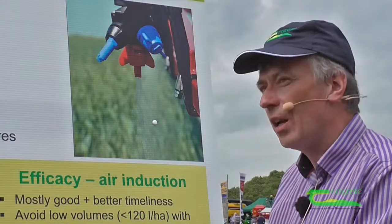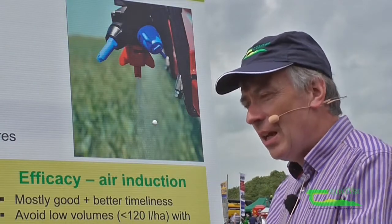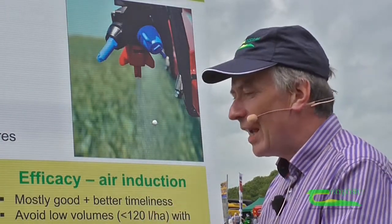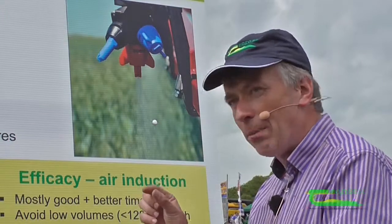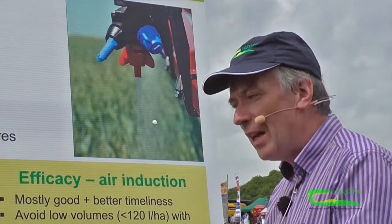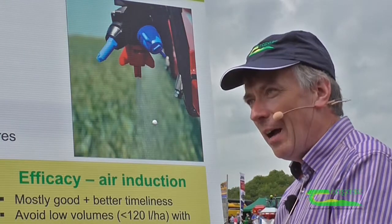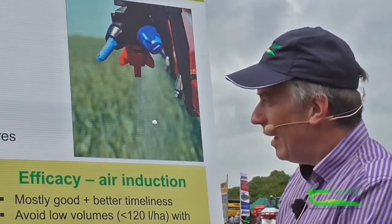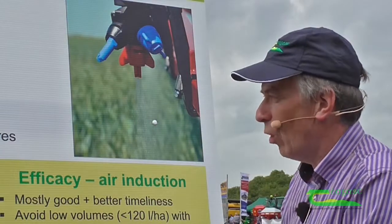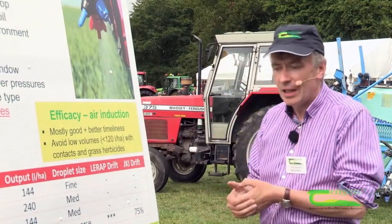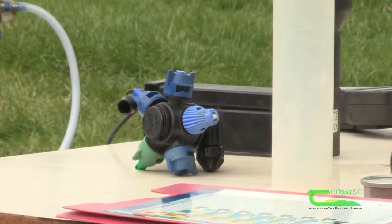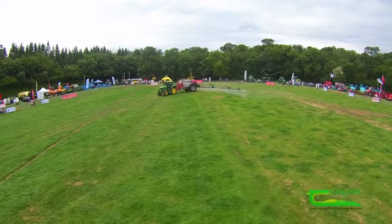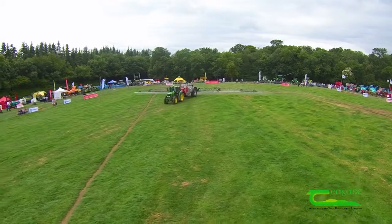The most common type used today is what we call an air induction nozzle. What this nozzle does is introduce air into a stream of fluid flowing through the nozzle. We tend then to get larger droplets with air bubbles within them, giving a physically larger droplet that's less prone to drift because of the air entrapped in the actual spray particles themselves. Every sprayer really should have the option of air induction nozzles, so that in conditions where there is some wind, operators can switch to those nozzles and reduce the drift risk.